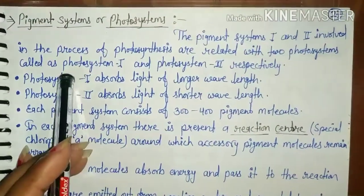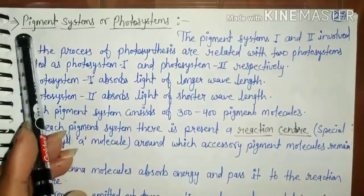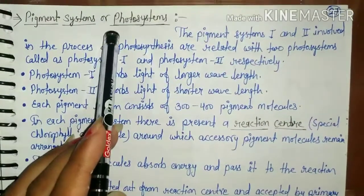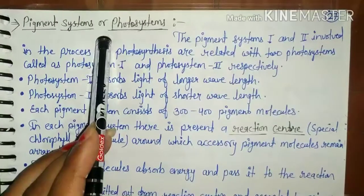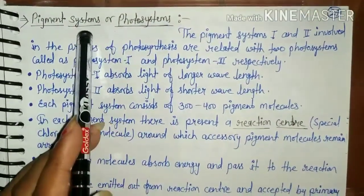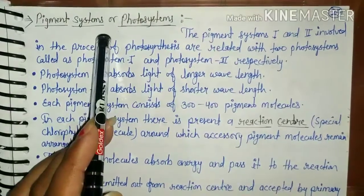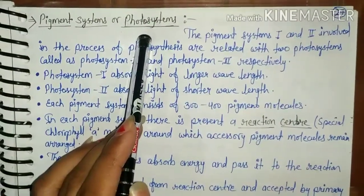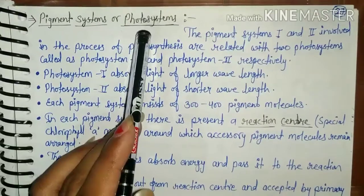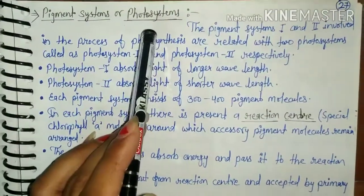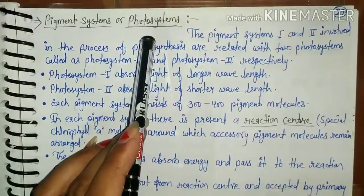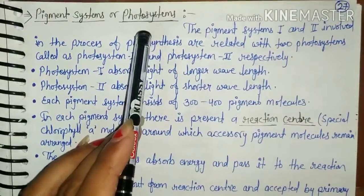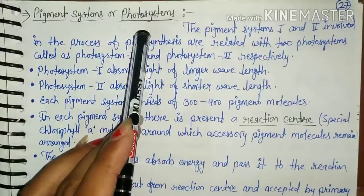Good morning students. Today we are going to talk about the pigment systems or photosystems. Before we study about light reactions, we are going to talk about the two pigment systems in plants. Based on the red drop and emersion effect observations, it was concluded that in plants at least two pigment systems are found.